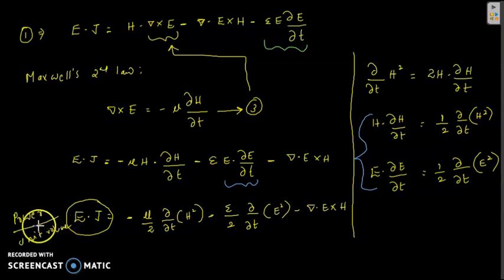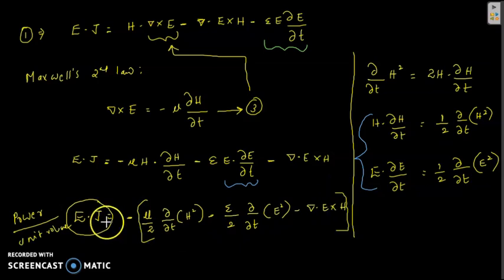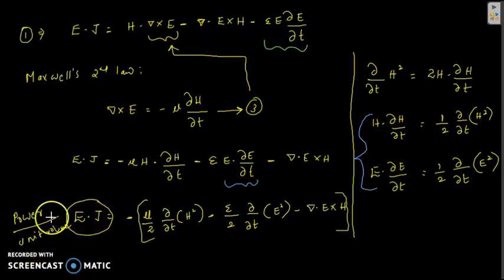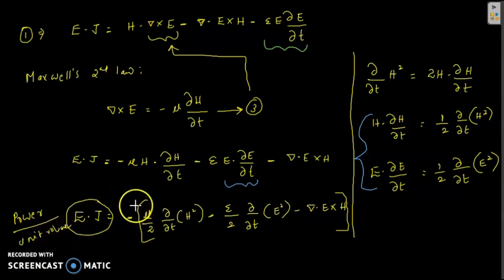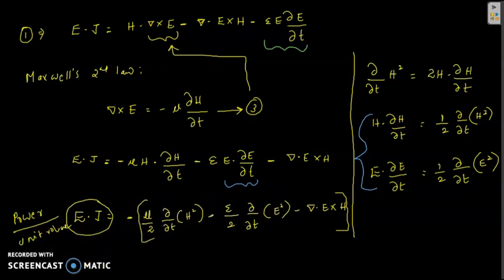To find the total power, we integrate this expression over the volume. Taking the integration with reference to the volume gives the total power. The time derivative can be taken outside the volume integral.